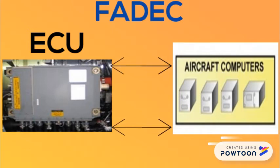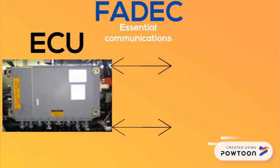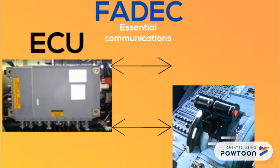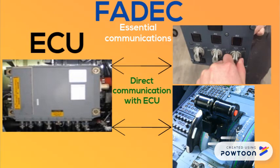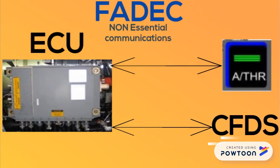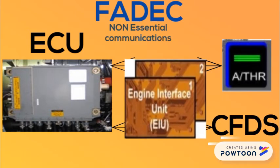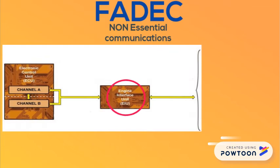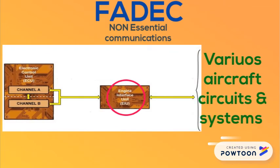The electronic control unit interfaces with various aircraft systems. Essential communication with the electronic control unit, like the thrust lever position and air data, is directed to and from the applicable systems and controls. Non-essential communication, like auto-thrust and centralized full display system, is routed through another computer, which is the engine interface unit of each engine. The engine interface units interface with various aircraft circuits and systems, and the data is then transmitted in a single stream to each ECU channel.